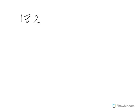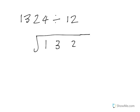Long division goes back to hopefully what you did in primary school. For example, 1324 divided by 12. We set it up and work through: 12 into 1 doesn't go, so we put the 1 with the 3. Then 12 into 13 goes once.